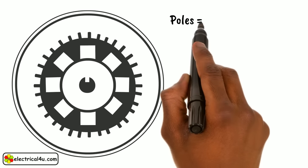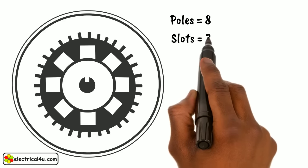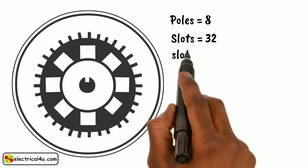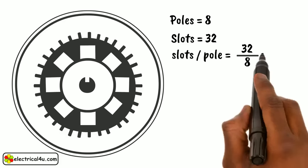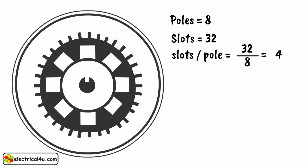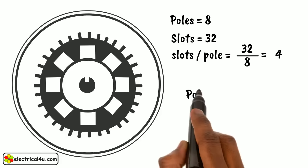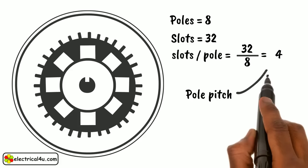There are 8 poles and 32 slots in the armature. Then the number of slots per pole is 32 by 8 equals to 4. Hence, the pole pitch of that machine is 4.